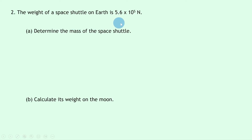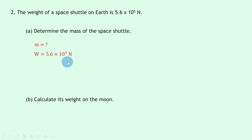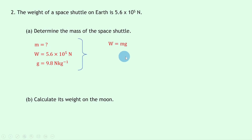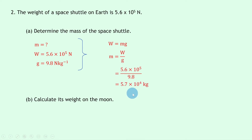Question two says the weight of a space shuttle on earth is 5.6 × 10⁵ newtons. Part a asks us to determine the mass of the space shuttle. Writing down what we know: we're trying to find m, the weight W is 5.6 × 10⁵ newtons, and g on earth is 9.8 newtons per kilogram. Writing down W = mg and rearranging by dividing both sides by g gives m = W/g. Substituting in: 5.6 × 10⁵ divided by 9.8 gives an answer of 5.7 × 10⁴ kilograms.